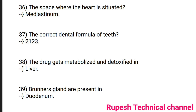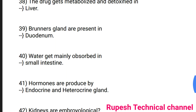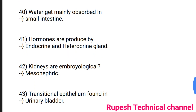Question number 38: Drugs get metabolized and then expelled in the liver. Question number 39: Brunner's glands are present in the duodenum. Question number 40: Water gets mainly absorbed in the small intestine. Question number 41: Hormones are produced by endocrine glands and exocrine glands.